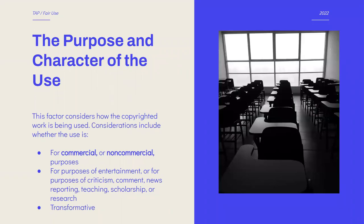The first factor is the purpose and character of the use, and this factor considers how the copyrighted work is being used. Considerations include whether the use is for commercial or non-commercial purposes. The Copyright Act specifically outlines commercial use or nonprofit educational purposes as purposes explicitly outlined as needing to be considered for fair use.